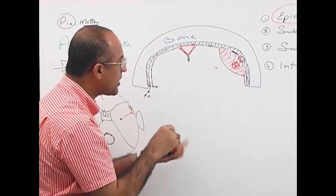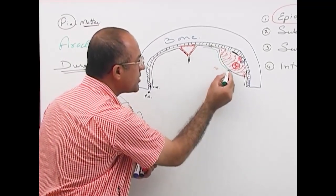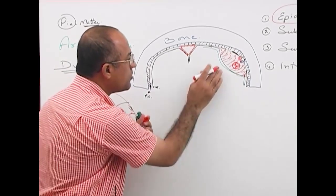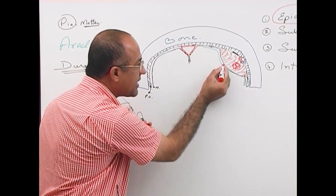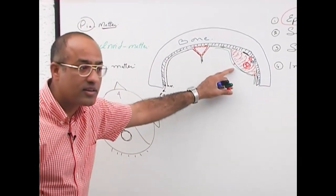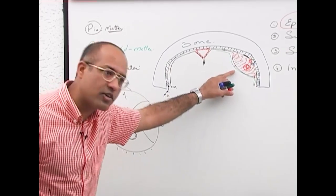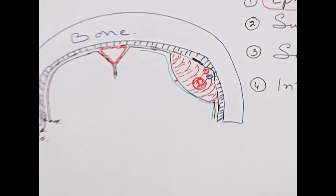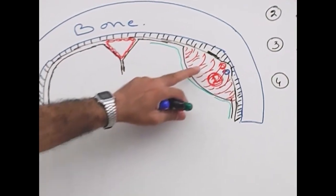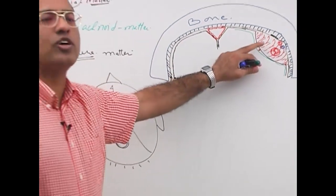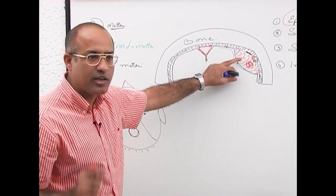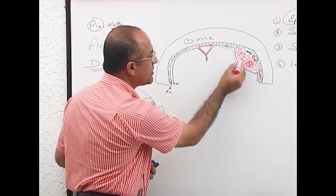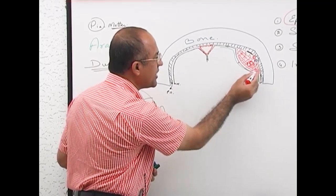Don't confuse this hemorrhage with the one that occurs between the dura and the arachnoid — that is a different hemorrhage, entirely with different causes and consequences. Right now we are concentrating only on epidural hemorrhage. Some authors also call it extradural hemorrhage, because the truly membranous dura mater is the meningeal layer.